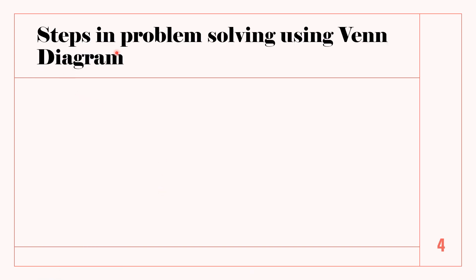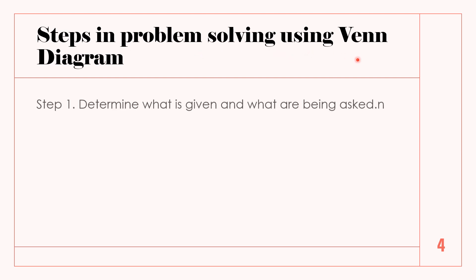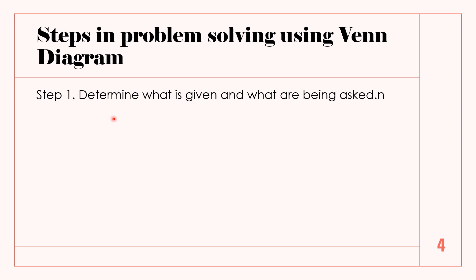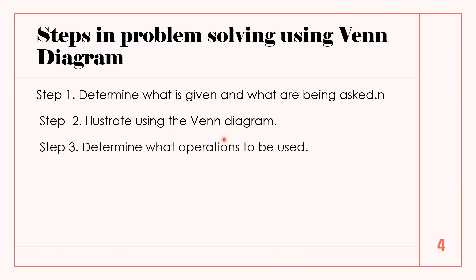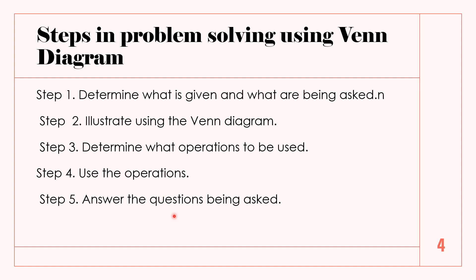We have steps in problem solving using a Venn diagram. Step 1: Determine what is given and what is being asked. Step 2: Illustrate using a Venn diagram. Step 3: Determine what operations to be used. Step 4: Use the operations. Step 5: Answer the questions being asked.